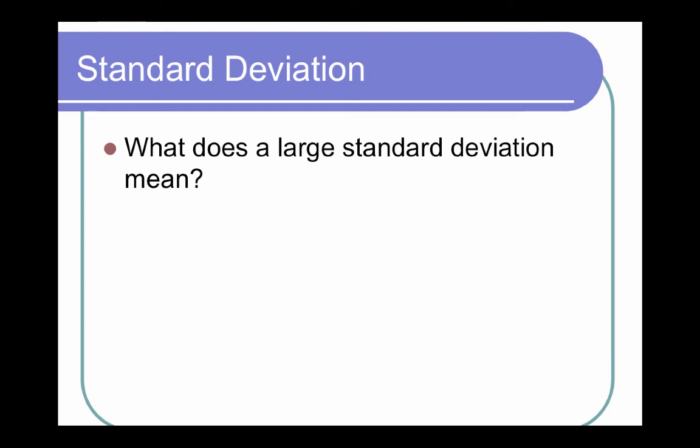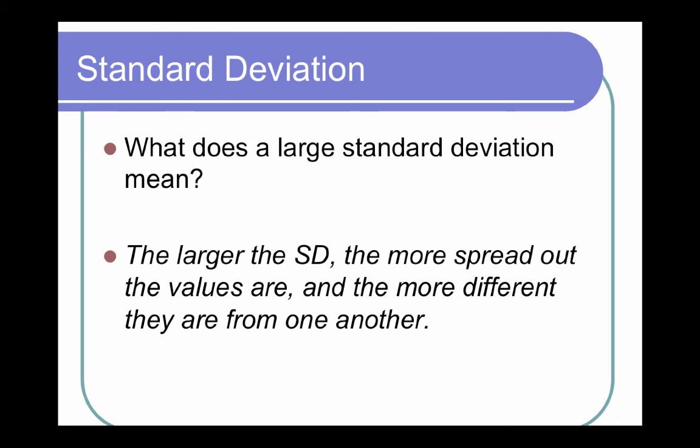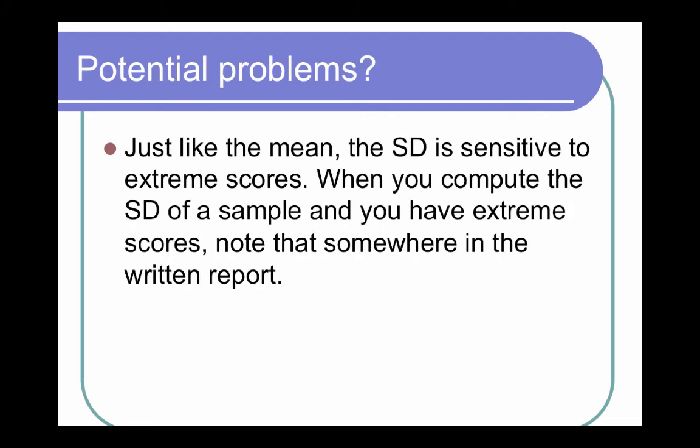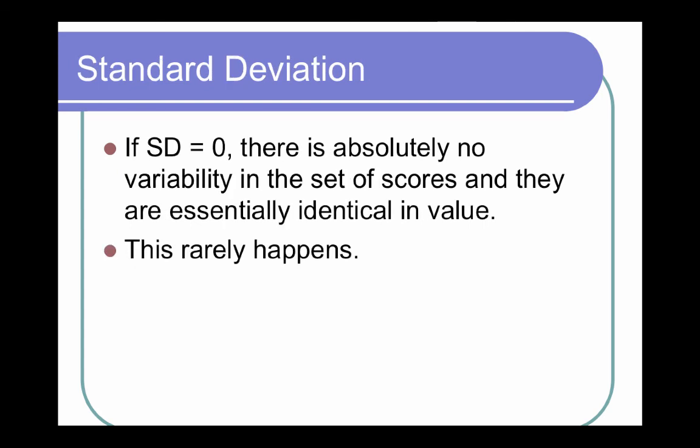Okay, so here are some questions for you. What does a large standard deviation mean? The larger the standard deviation, the more spread out the values are, and the more different they are from one another. Remember the fat and skinny curves. What are the problems we might encounter? Just like the mean, the standard deviation is sensitive to extreme scores. Why? Because we just use the means in that formula. So you have to be really careful when you compute the standard deviation, and you have extreme scores, you're going to want to let your viewer, whoever is consuming that data, know that they may have been influenced by extreme scores. I want you to think, if standard deviation is zero, then there is no variance. There is absolutely no variability in the set of scores. So they're essentially the same. This is rarely the case unless your numbers are all exactly the same.